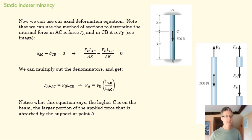So what does this equation say? It says the higher C is on the beam. In other words, if CA is really small, or LAC is small, then FA is going to be bigger, right? If I move C way up here, then we'd expect that that support force at A would be taking the brunt of that force, right?